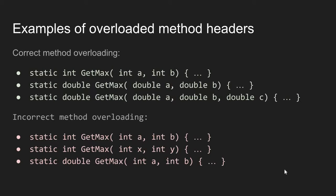Let's look at some good and bad examples of overloaded methods. These first three methods are examples of correct method overloading. Here I have a method named getMax declared three times. In the first instance, getMax takes two integer values and returns an integer — it might return the highest of the two. The second definition has two double input parameters and returns a double. Because the input parameter types differ from the first definition, this is correct overloading. When getMax is called with two integers, the compiler uses the integer version; with two doubles, it uses the double version.